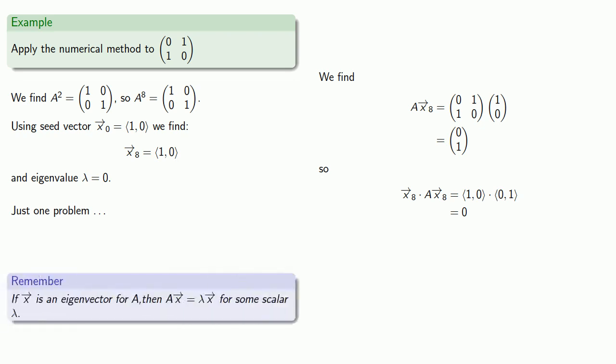Because remember, if X is an eigenvector for A, then AX is going to be lambda X for some scalar lambda. In other words, this numerical method is completely wrong.